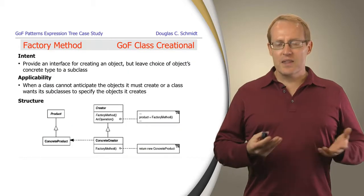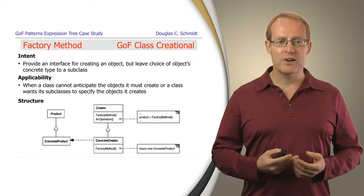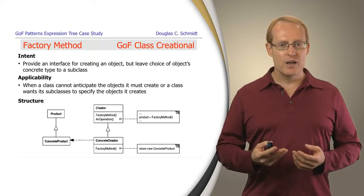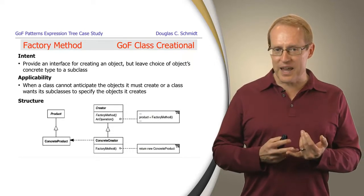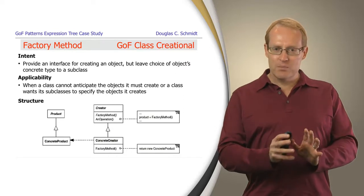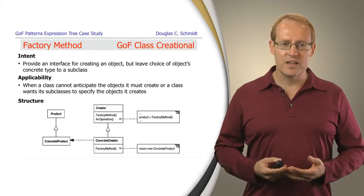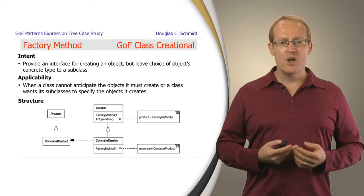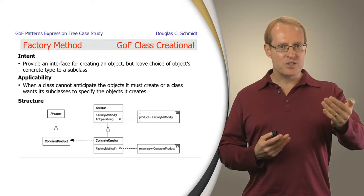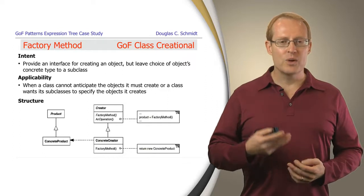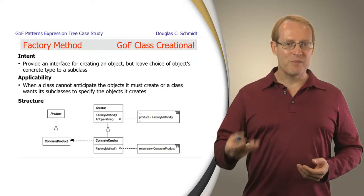The bridge pattern is used as always. This particular way of arranging the software and class pieces is the Gang of Four's factory method pattern, which is a class creational pattern. The intent of this pattern is to provide an interface for creating an object, but leave the choice of the object's concrete type to the subclass. You would typically use this pattern when a class cannot anticipate ahead of time the objects it has to create — it just knows the base class of objects it creates — or if the class wants to allow subclasses to override its default choice. In this structure, you have a creator class which defines a factory method that returns a base class instance called a product.